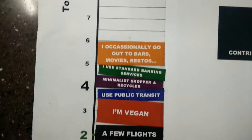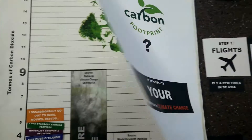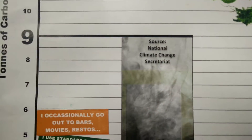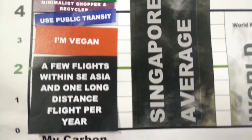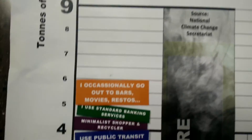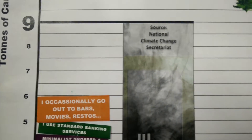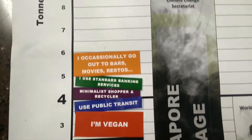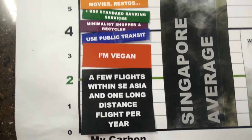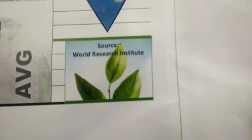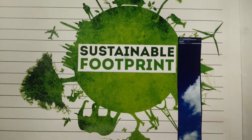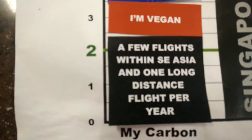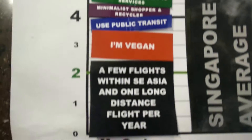Now they can actually see what their carbon footprint approximation is — mine is about six tons. The next part is the reveal: this flips open and reveals a couple of things. First, it shows what the Singaporean average is, so they can compare themselves. In my case, I'm better than the average Singaporean. Then it shows the world average, which is about four tons, so I'm above that. But most importantly, it shows the sustainable footprint, which according to the World Research Institute is two tons — meaning I'm three times what is sustainable.